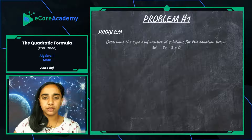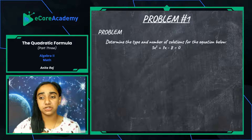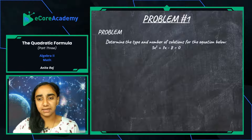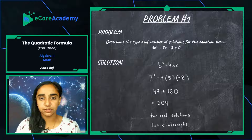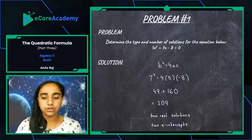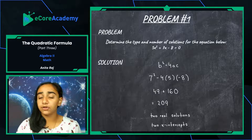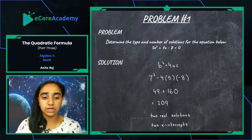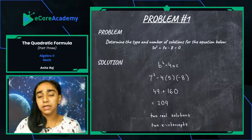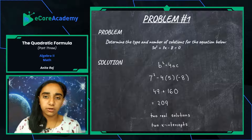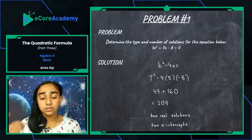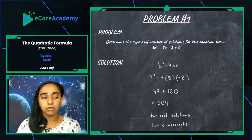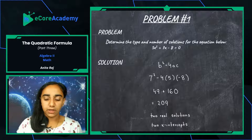Let's do our first problem: determine the type and number of solutions for the equation 5x squared plus 7x minus 8 equals zero. The solution is already pre-written. This question is asking how many solutions this quadratic equation is going to have — they're not asking us to actually solve it, they're simply asking us to find the discriminant and use it to determine if there are no solutions, one solution, or two solutions.